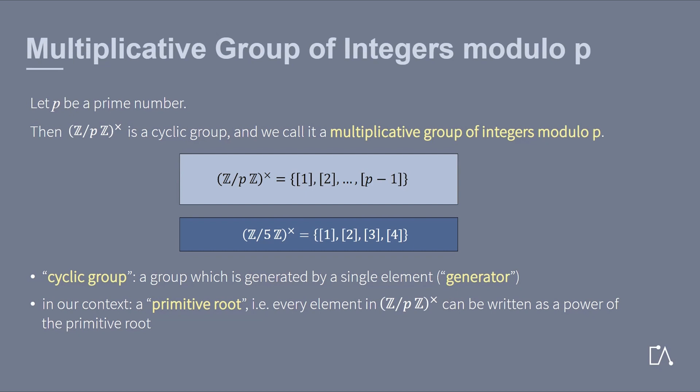Again, in our context, we call this generator a primitive root, which here means that every element of our group can be written as a power of the primitive root.